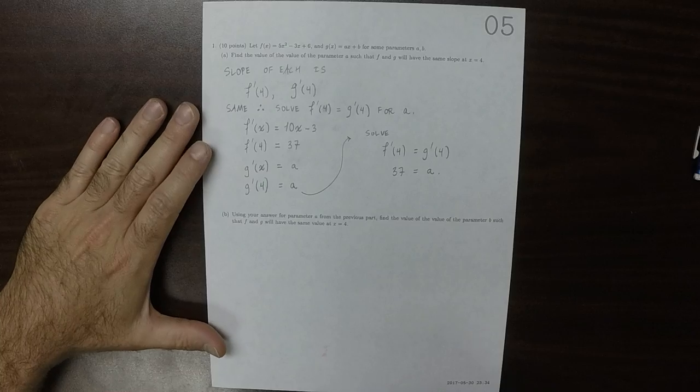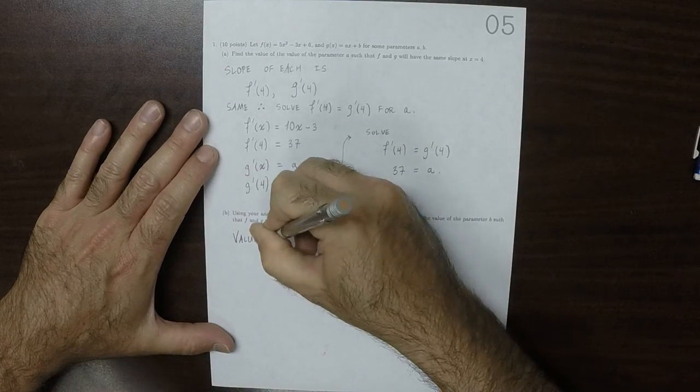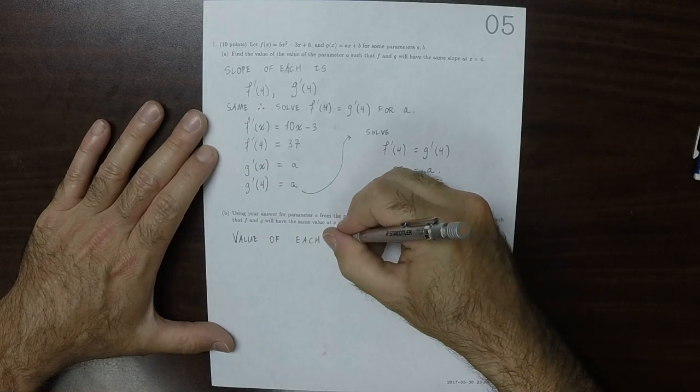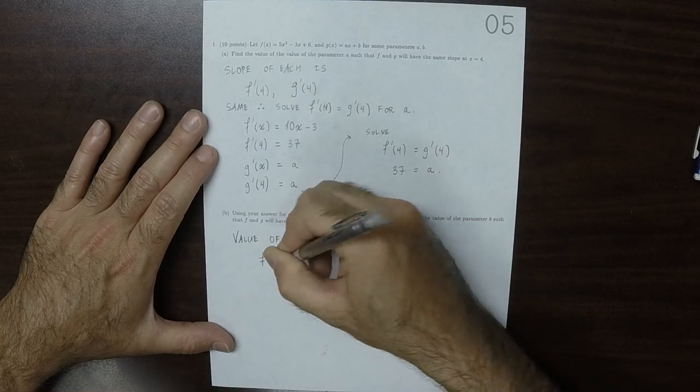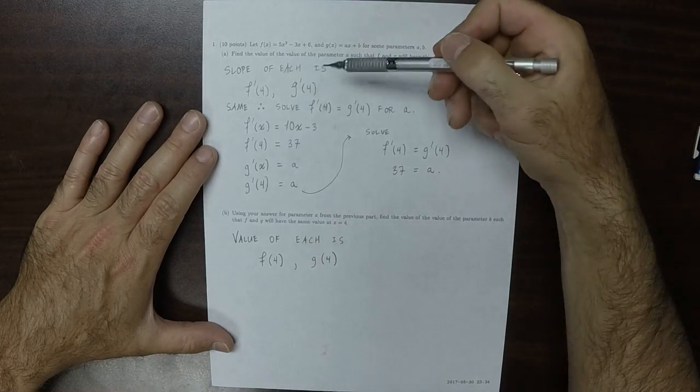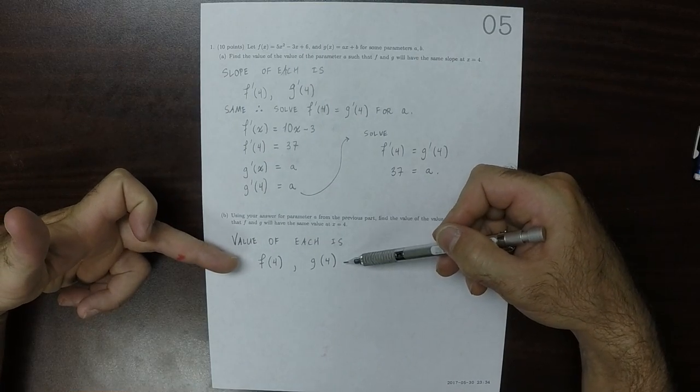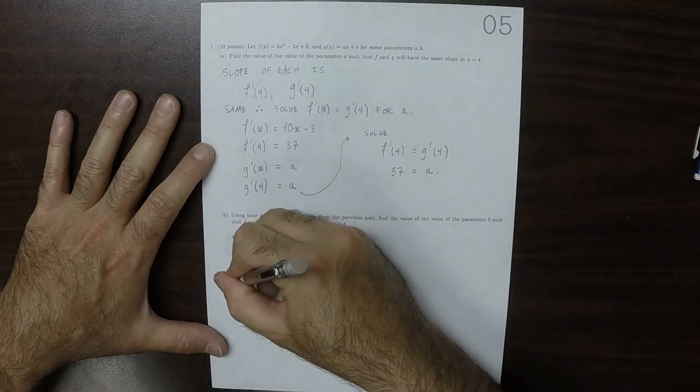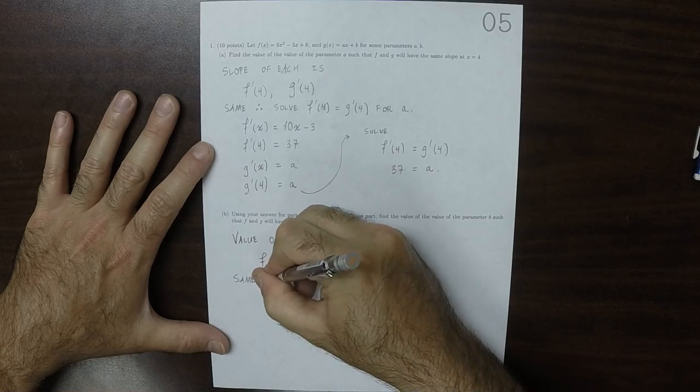And now, the value of each is the function evaluated at 4. So notice that for the slope, it's the derivatives evaluated at 4, whereas for the value, it's the original function evaluated at 4. So, since we want these to be the same, that means we need to solve f of 4 equal to g of 4 for parameter b.